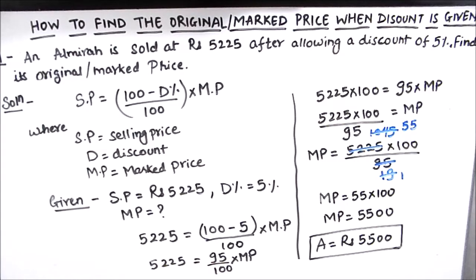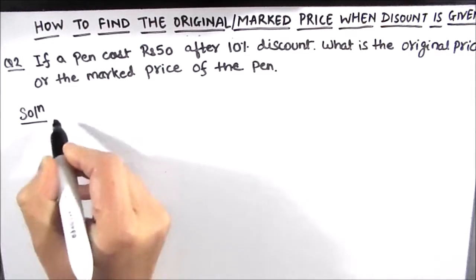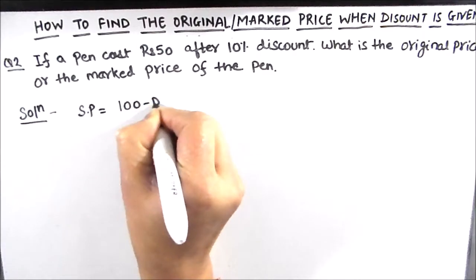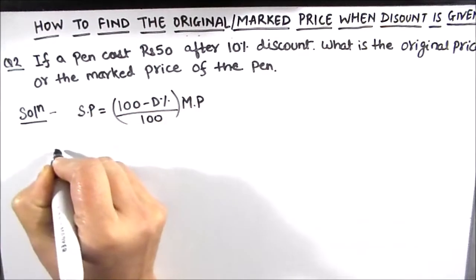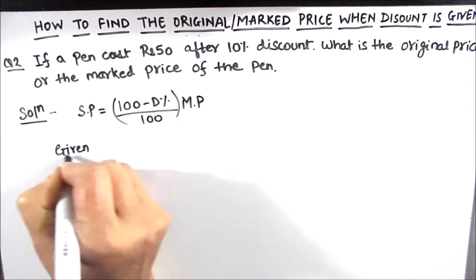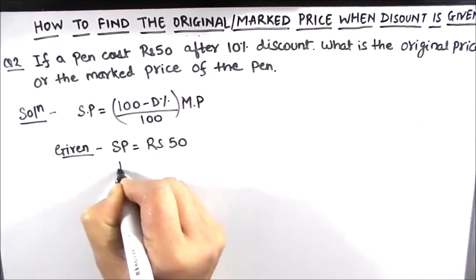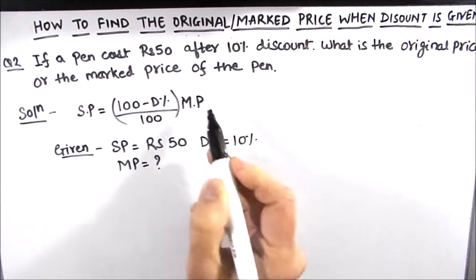This is how you can find the original price or the marked price when discount percentage is given. Let's solve one more example. If a pen costs rupees 50 after a 10 percent discount, what is the original or marked price of the pen? The formula is selling price equals (100 minus discount percentage) divided by 100, times marked price. Selling price is rupees 50, discount percentage is 10 percent, and marked price is to be found.